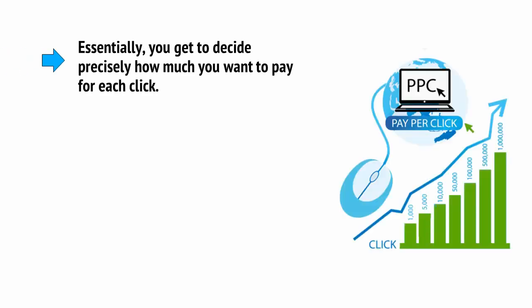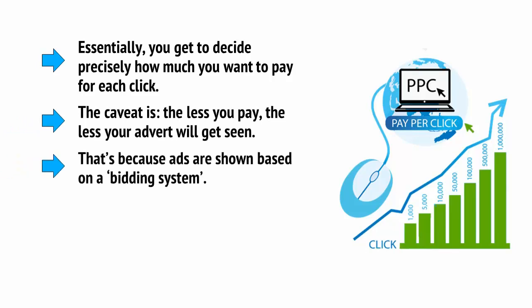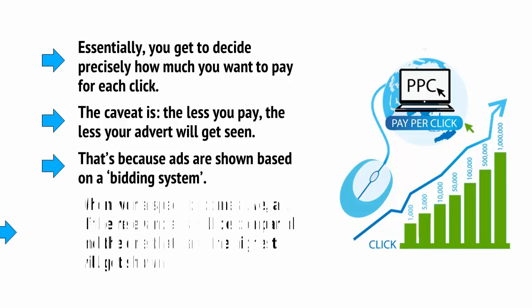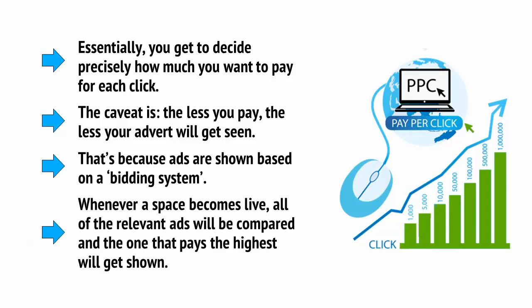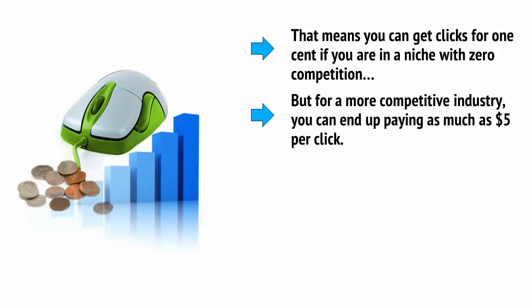Essentially, you get to decide precisely how much you want to pay for each click. The caveat is, the less you pay, the less your advert will get seen. That's because ads are shown based on a bidding system. Whenever a space becomes live, all of the relevant ads will be compared, and the one that pays the highest will get shown. That means you can get clicks for one cent if you're in a niche with zero competition, but for a much more competitive industry, you can end up paying as much as $5 per click.